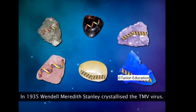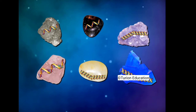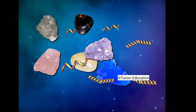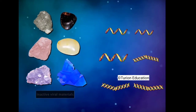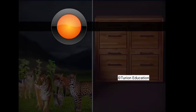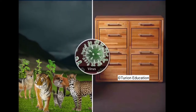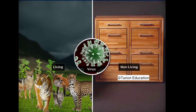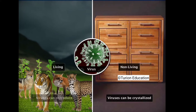Wendell Meredith Stanley crystallized the tobacco mosaic virus in 1935. In 1936, he isolated nucleic acid and proved that withdrawing this material left the crystals without any virus activity; he concluded that the virus is a nuclear protein. Viruses are regarded as intermediate between non-living things and living organisms — they are non-cellular and can be crystallized like simple chemical substances, yet they can reproduce inside a living cell.